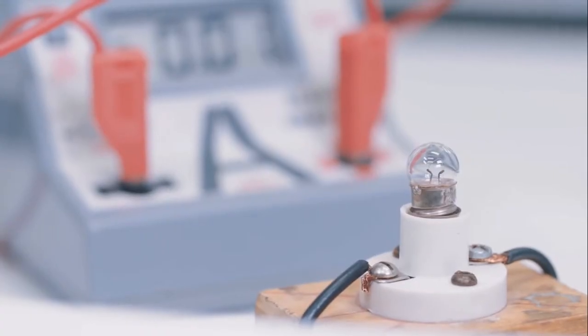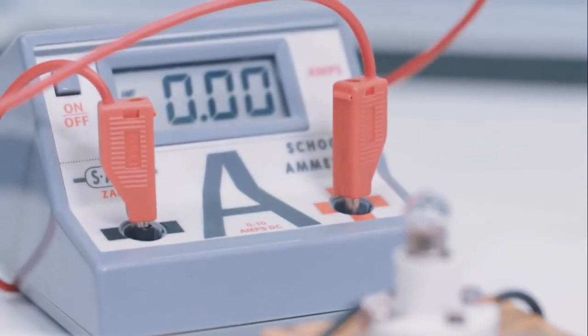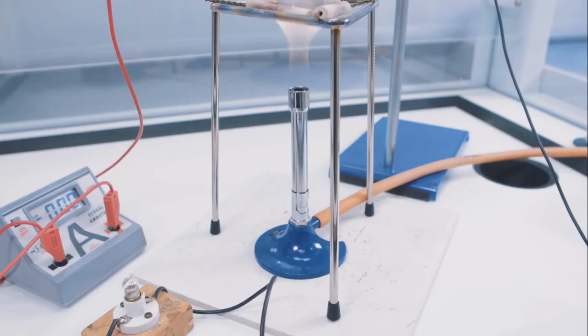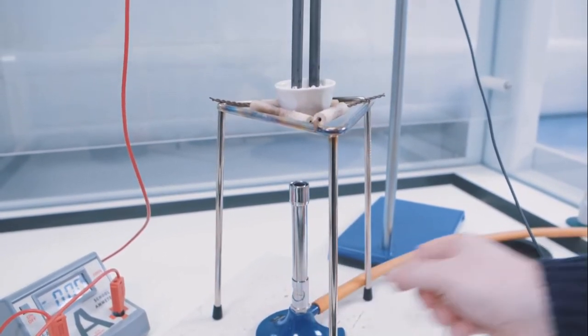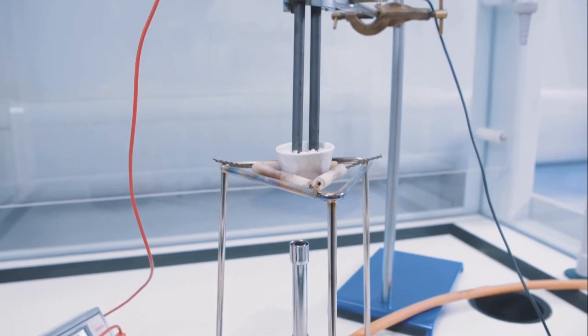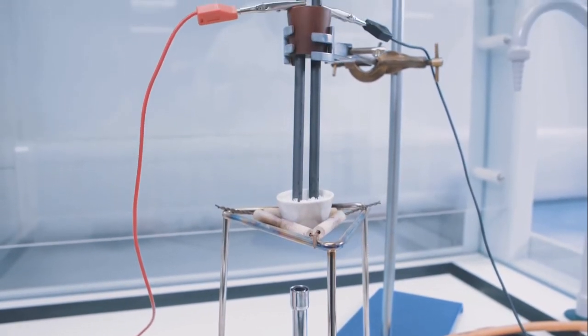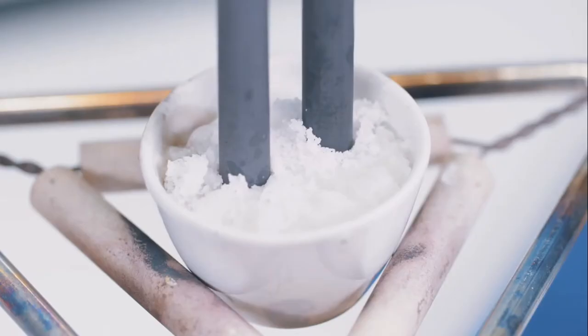Note that the bulb is not lit at this stage. Start heating the crucible with a Bunsen burner. Ensure that the flame is not too big and that it is focused on the bottom of the crucible. The zinc chloride is now melting.